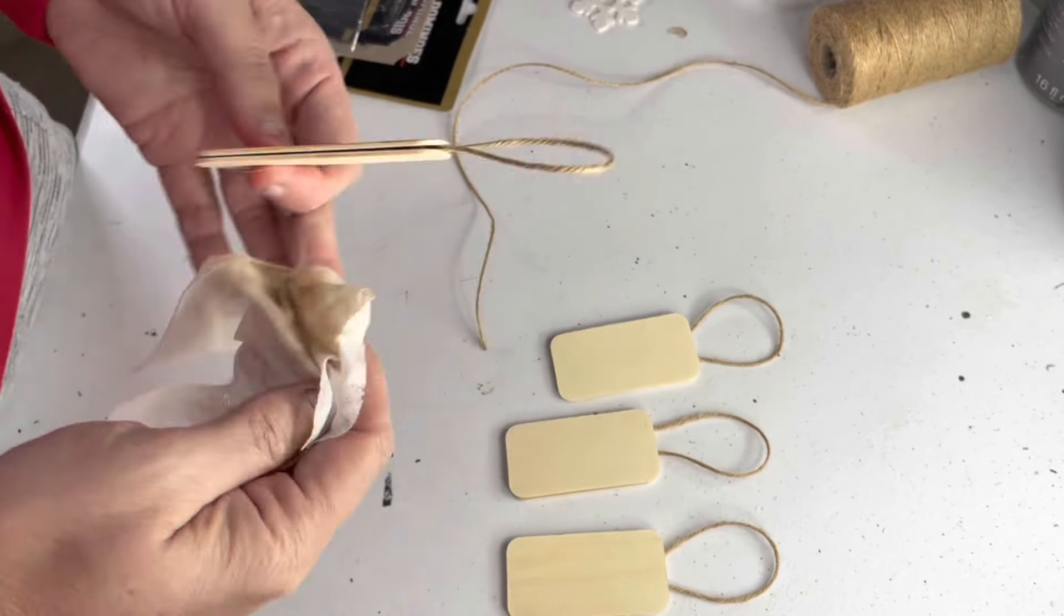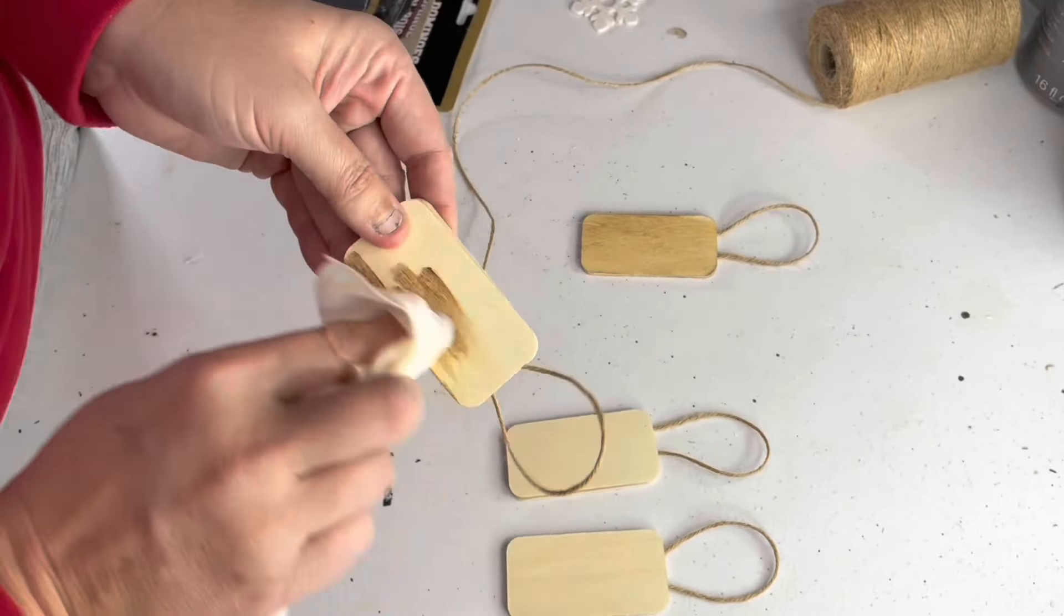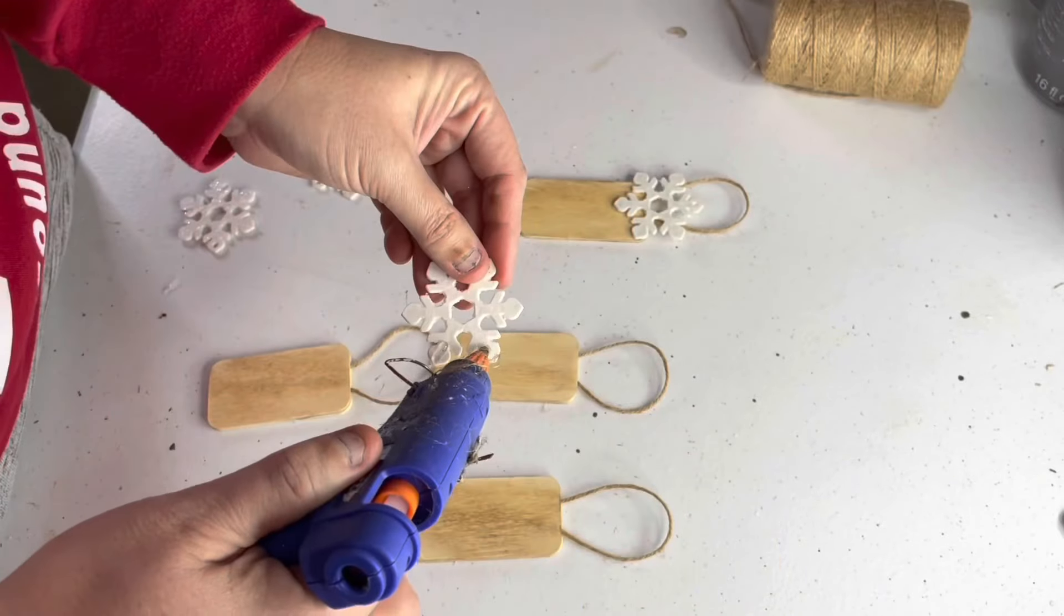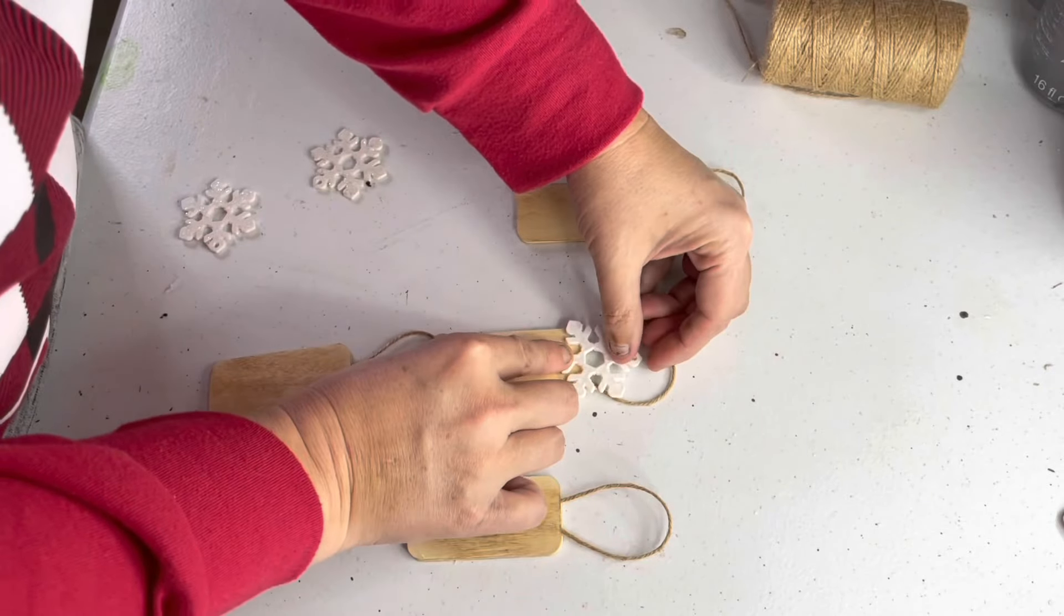Then I used a baby wipe to apply a tiny bit of Waverly Antique Wax to give the wood a little color and I think it also brings out the grain of the wood a little too. Next I just used hot glue to attach one snowflake to the top of each ornament.